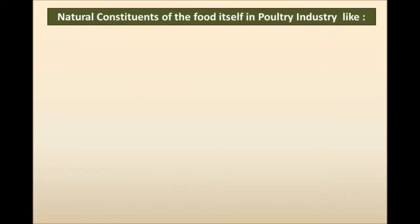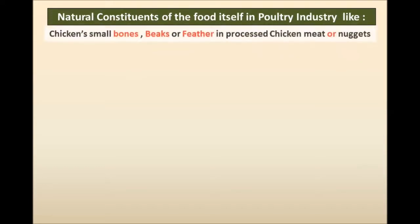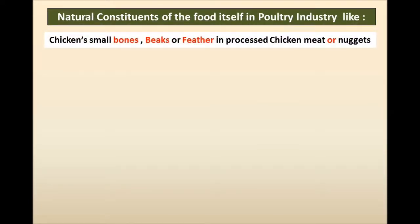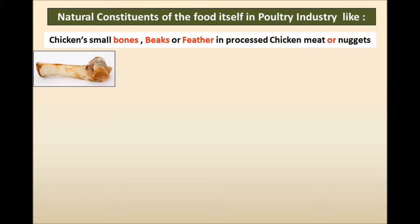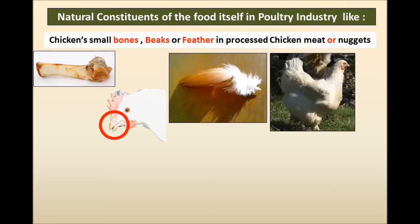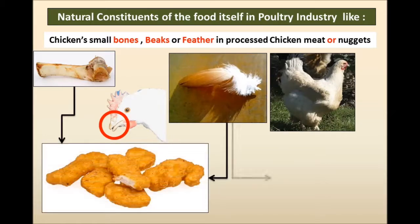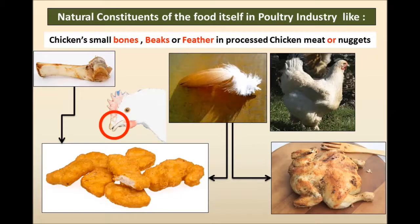Moving to another industry: the poultry industry is similar to meat, but with the addition of beaks and feathers, along with some drippings. The major concerns are bones, beaks, and feathers from chicken during processing — whether into nuggets, fried, or boiled chicken. There must be control measures for all these physical hazards that are naturally constituents of the food itself.